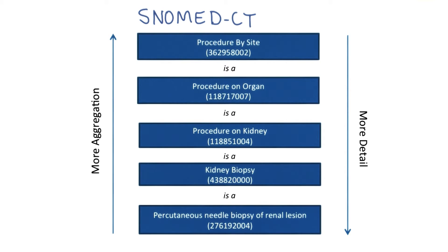SNOMED is huge and complex. Even the SNOMED-CT subset has 311,000 concepts and represents 1.3 million relationships among them.